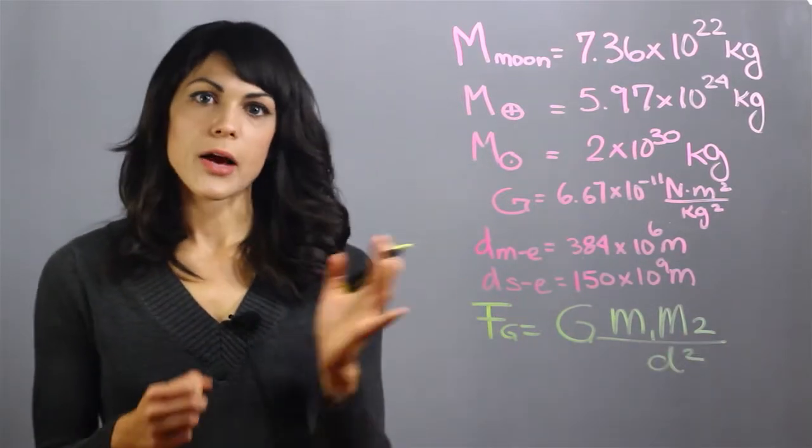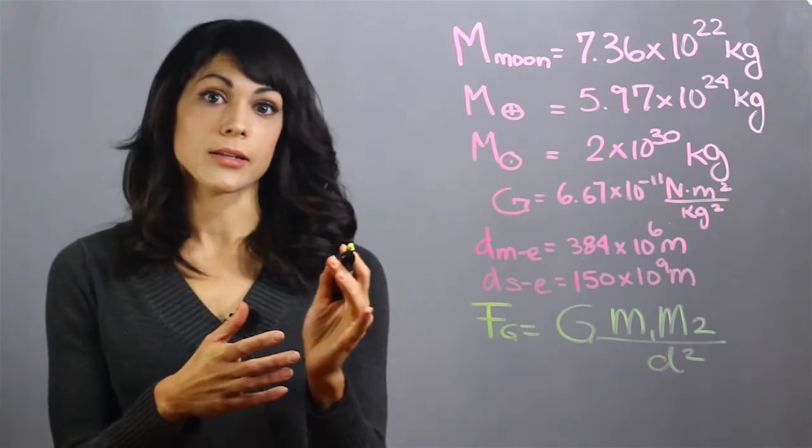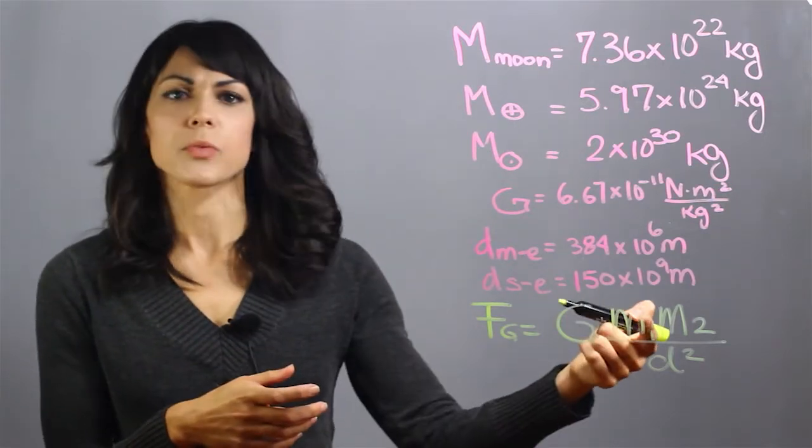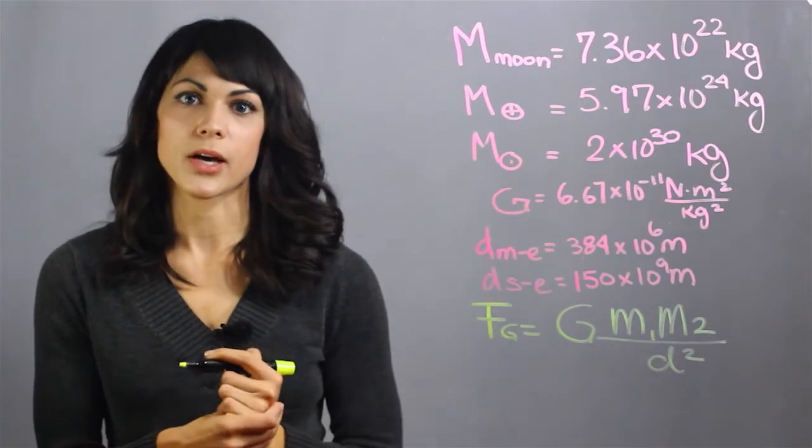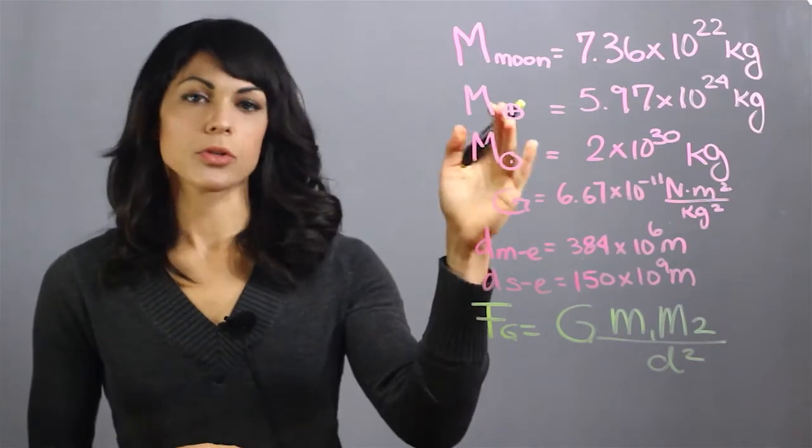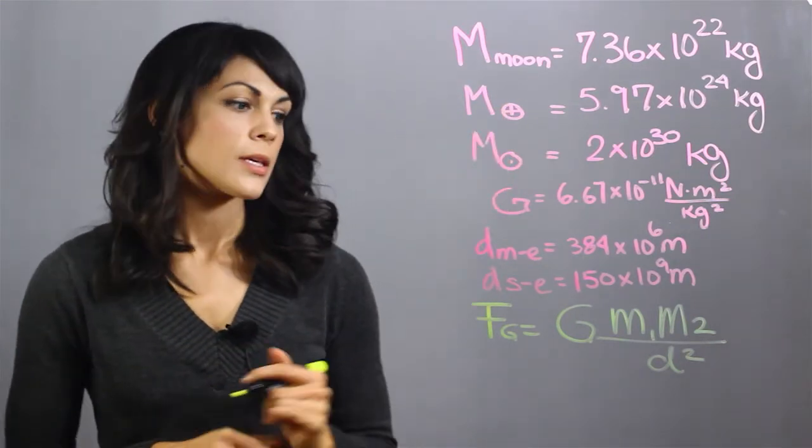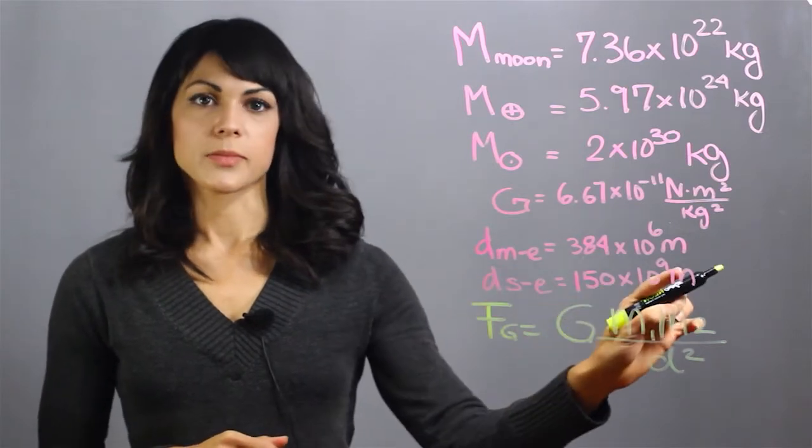To figure out how strong the gravitational pull of the sun on the earth is, for the mass one you plug in the mass of the sun, which is the one with the circle and the dot in the center, and for the second one you plug in the mass of the earth, which is the circle with the cross in the middle. The distance between the sun and the earth is 150 times 10 to the ninth meters.